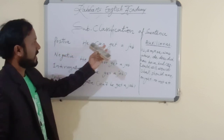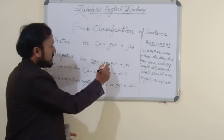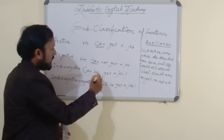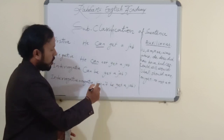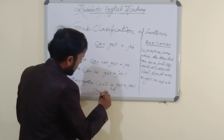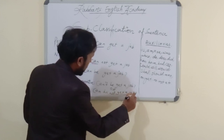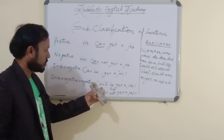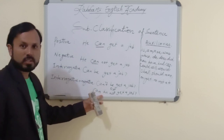First is positive: 'He can get a job.' Negative — after auxiliary, 'not': 'He cannot get a job.' Interrogative — auxiliary will come first: 'Can he get a job?' Interrogative negative: 'Can't he get a job?' Or you can write: 'Can he not get a job?' — with a question mark. 'Can't he get a job?' is informal, and 'Can he not get a job?' is formal language.